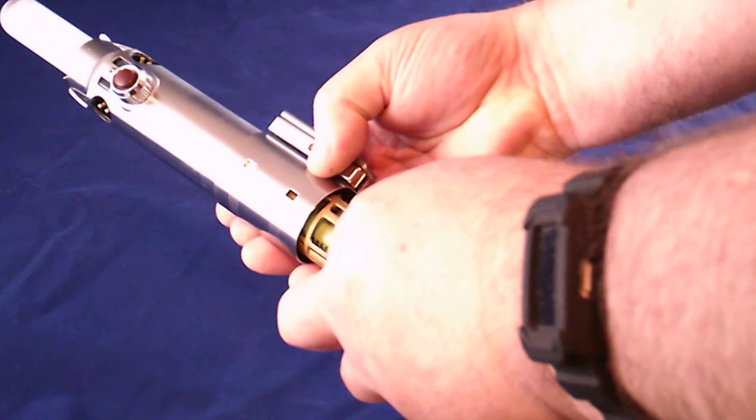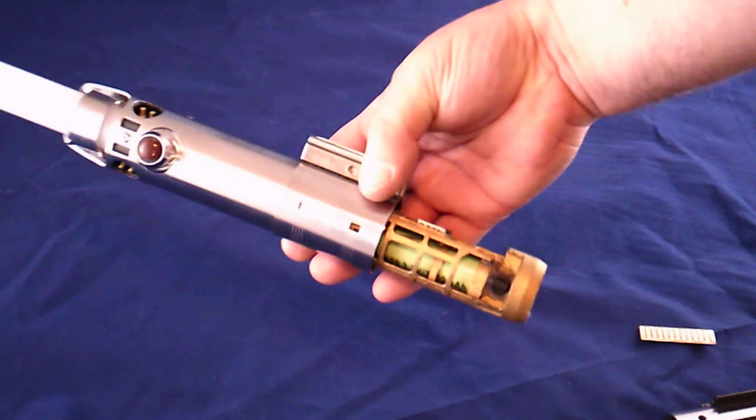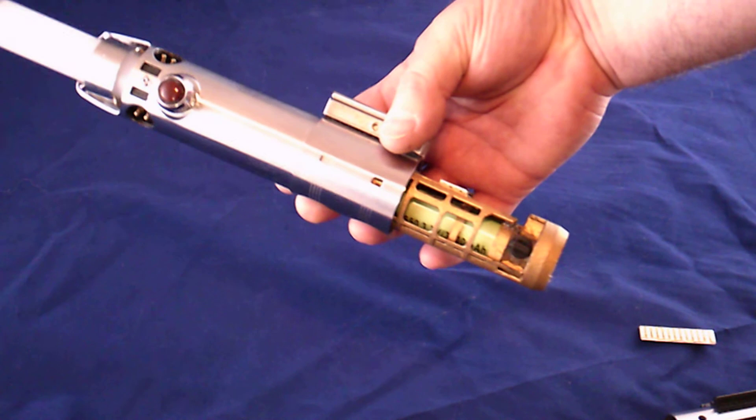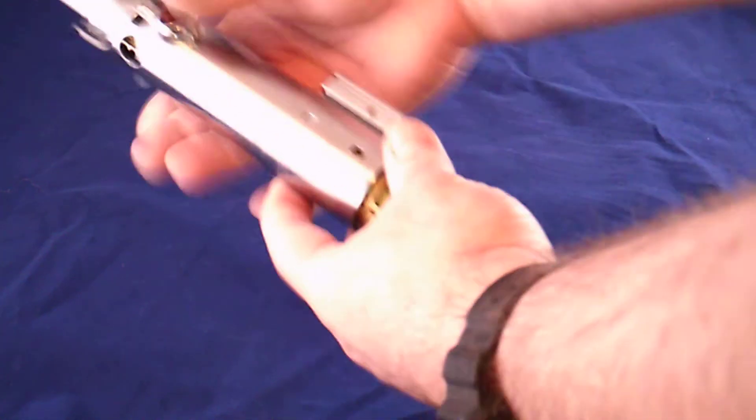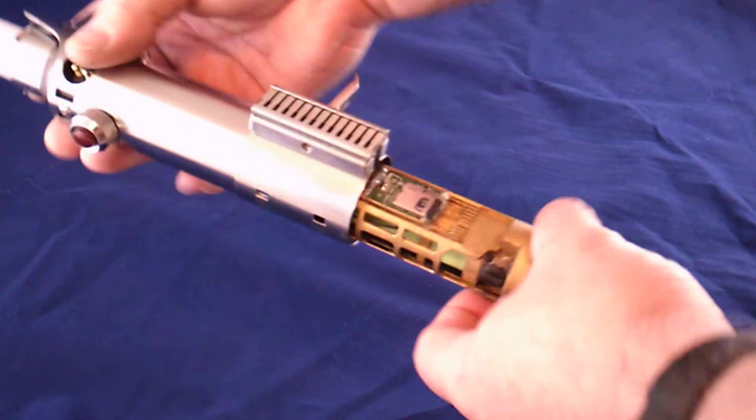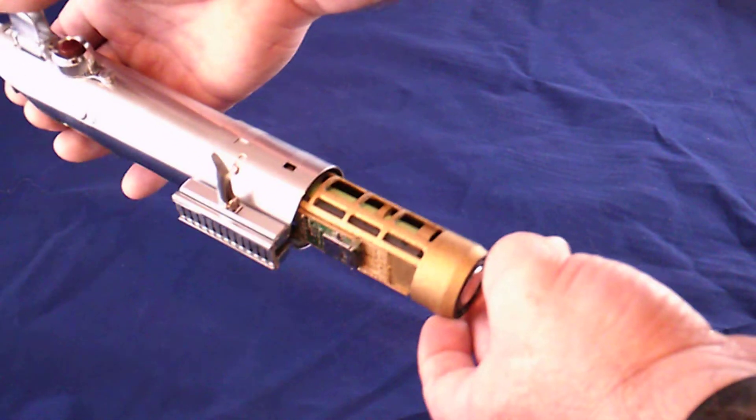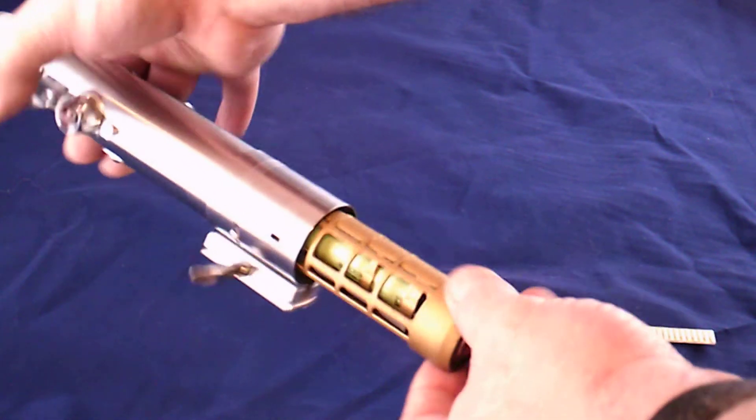That lightsaber was Luke's and his father's before him, and now he calls to you. And on this chassis I use some antique gold rub and buff to give it a metallic look.